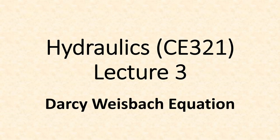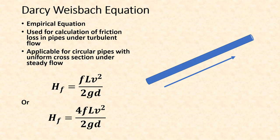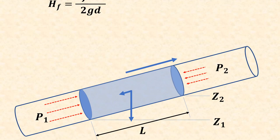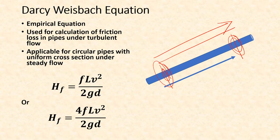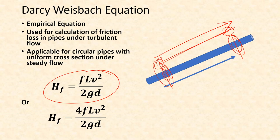In this lecture we are going to derive and discuss the Darcy-Weisbach equation. This is an empirical equation used for calculation of friction loss in pipes under turbulent flow. By friction loss we mean the loss of head between two cross-sections. If you measure the head at two cross-sections and flow is taking place in one direction, the head at the downstream cross-section is slightly less, and this difference is given by hf = flv²/2gd or 4flv²/2gd, where f represents different things in each form.